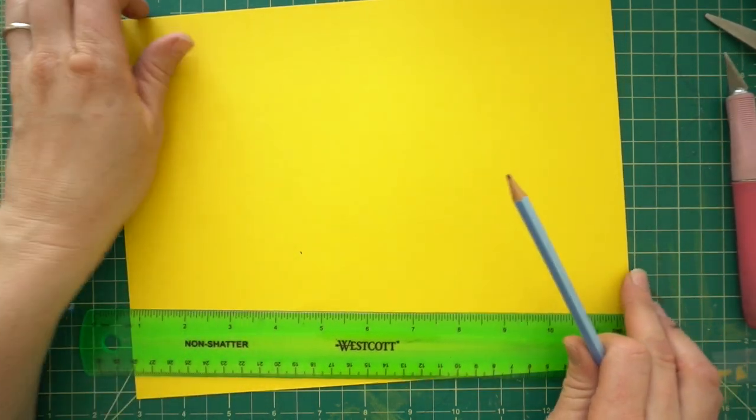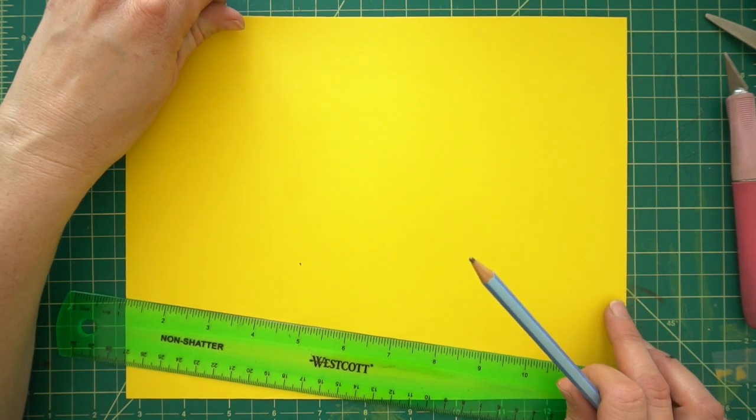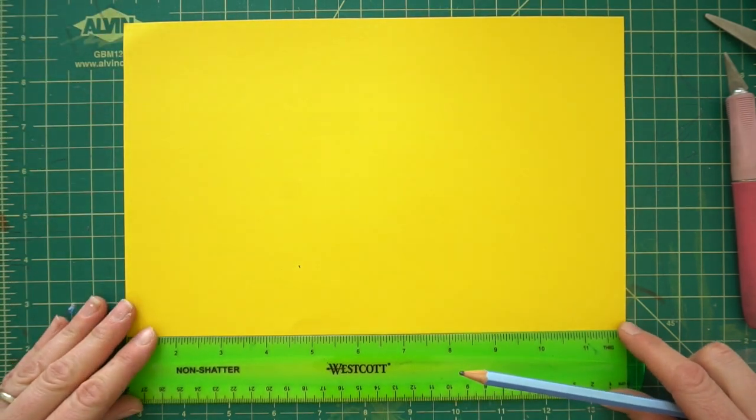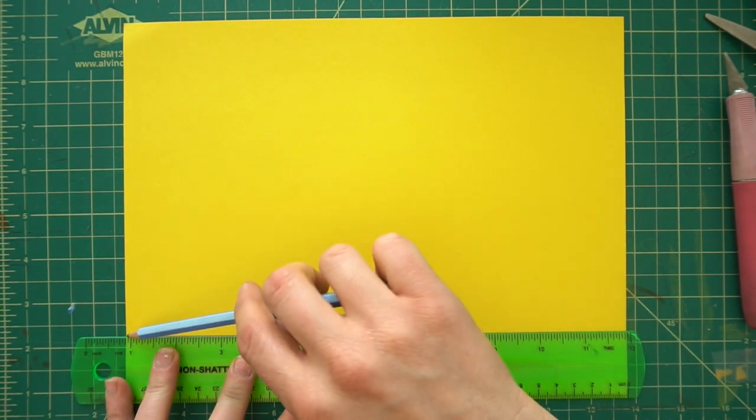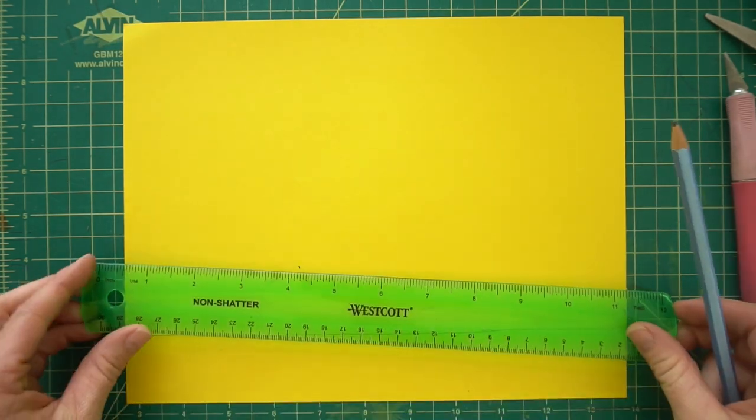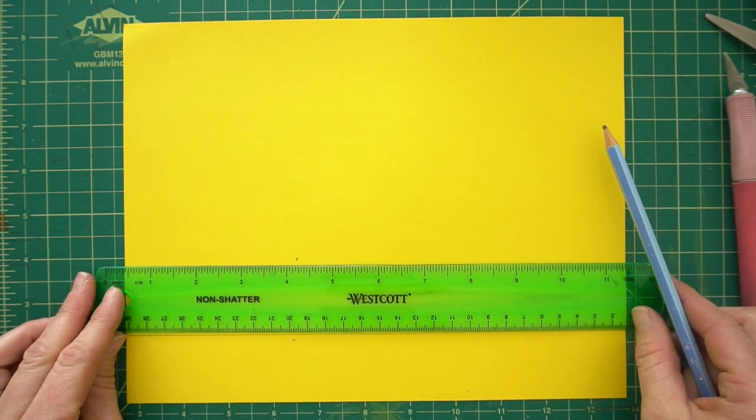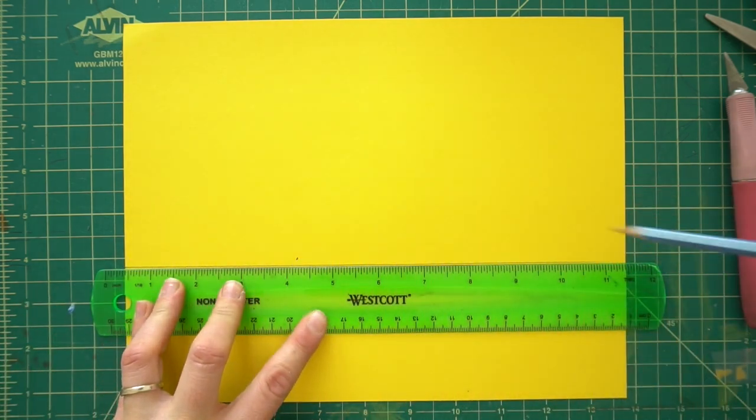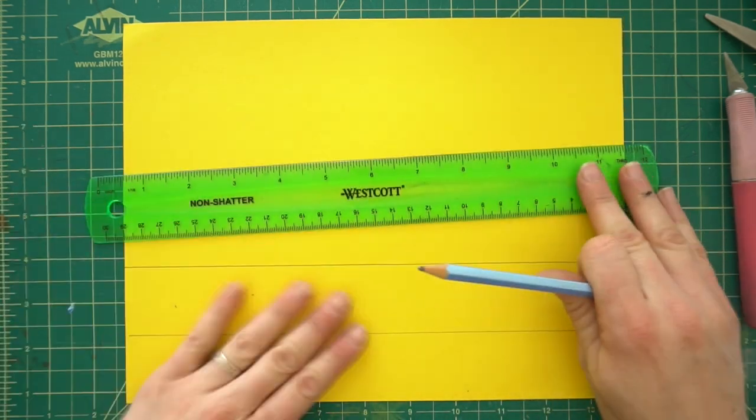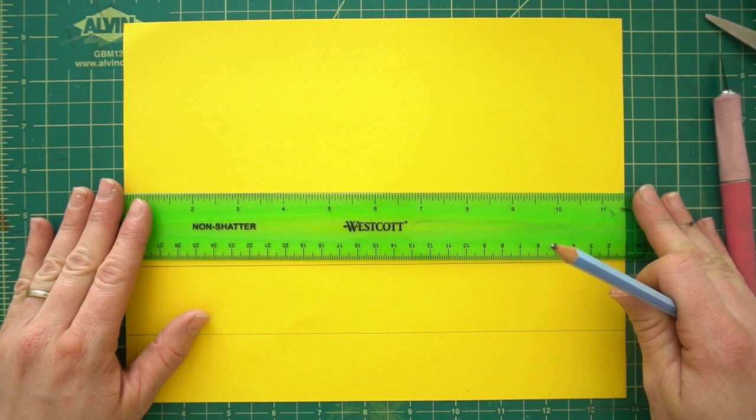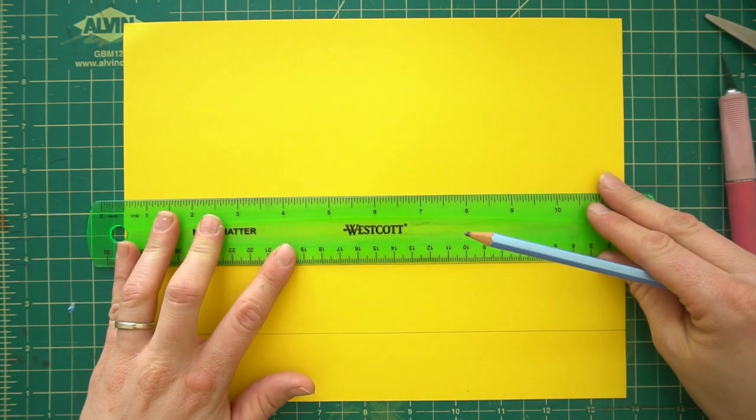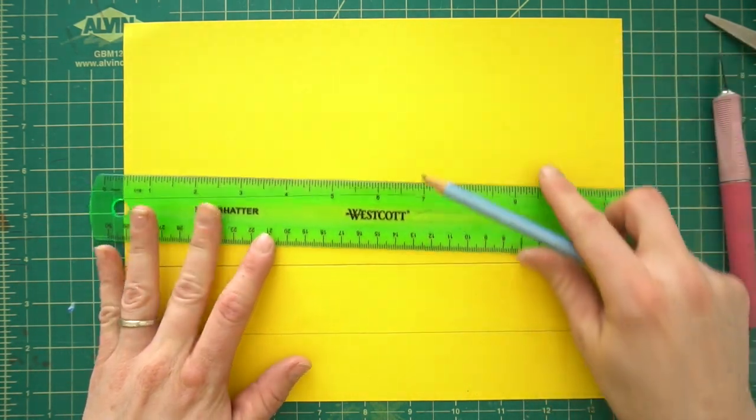Grab your ruler and we are going to make four lines coming up from the bottom of our paper. So one, I'm going to be drawing these dark, but I would draw them really lightly. So you don't want to see them on all of your letters. Two. Three. And four.